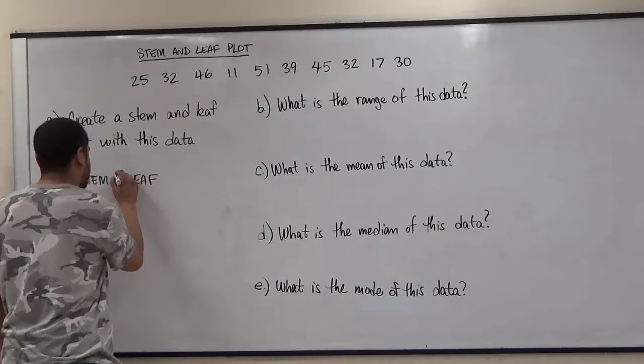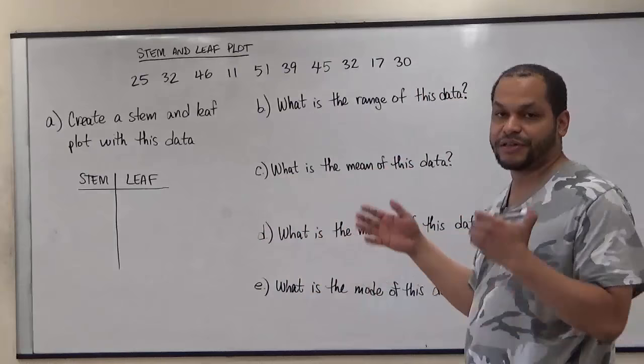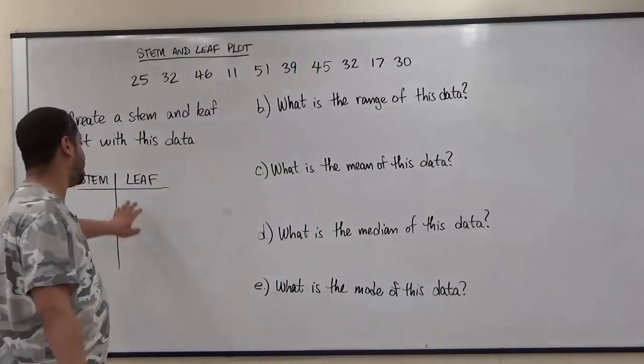Now there's a lot of variations for how people actually do this. Some people use commas for every leaf, some people don't use any commas for the leaf. In this video we're going to do it without commas, and once I finish the stem and leaf plot I'm going to insert the commas to show you the difference. However, if you're looking in the textbook usually every leaf has no comma in between them.